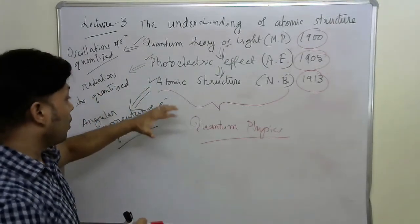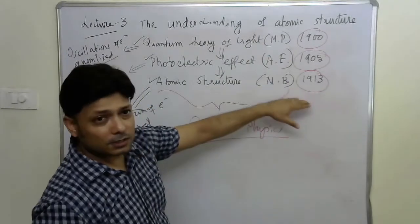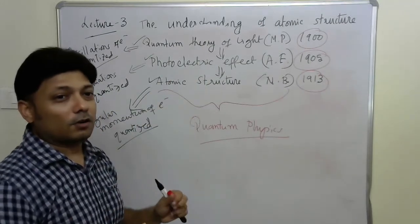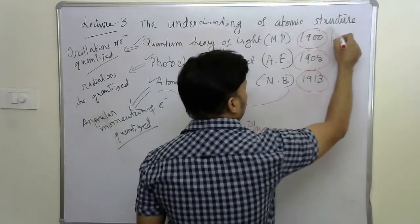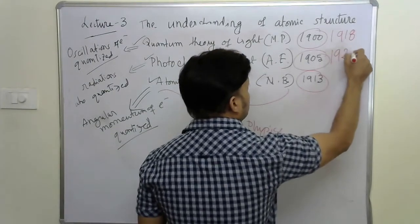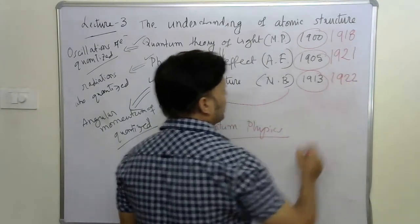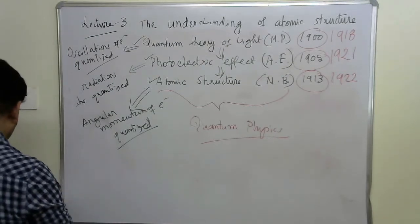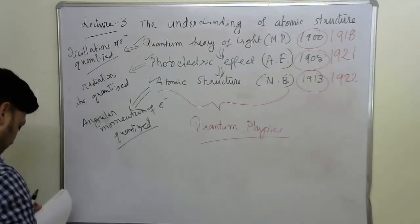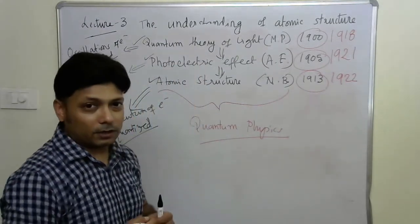This is how from the classical physics, the modern physics gradually shaped up within as little as 13 to 14 years. And in recognition, each of those scientists was awarded Nobel Prize. I have already told you that in 1918, Max Planck was awarded Nobel Prize. In 1921, Albert Einstein was awarded Nobel Prize. And in 1922, the very next year, Niels Bohr was awarded Nobel Prize.